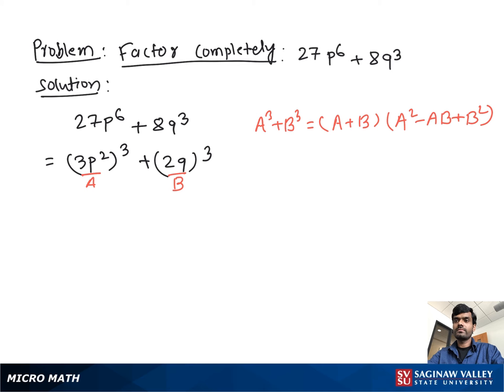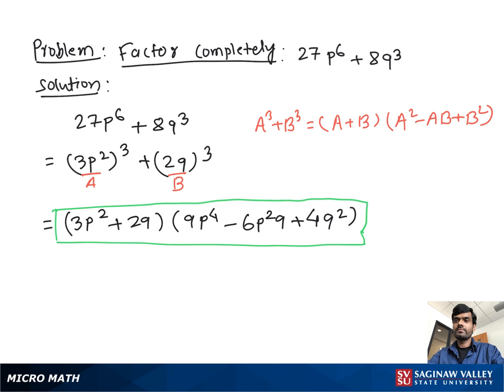Then we can easily write (3P^2 + 2Q) times (9P^4 - 6P^2Q + 4Q^2). Now you cannot further simplify or factor, so this is our final complete factor.